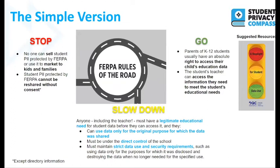You heard a quick summary of the Family Educational Rights and Privacy Act — FERPA — in an earlier video, but we're going to go more in depth now. This is the simple version — the slide to print out and put next to your desk. Based on a resource from the Data Quality Campaign, it shows FERPA's rules of the road. When it comes to red lights: no one can sell student personal information protected by FERPA or use it to market to kids and families. This also applies to students over the age of 18.